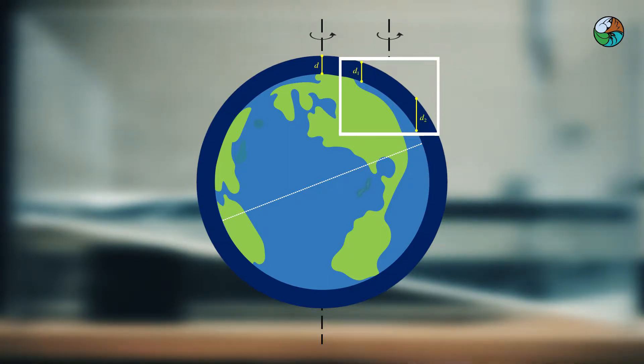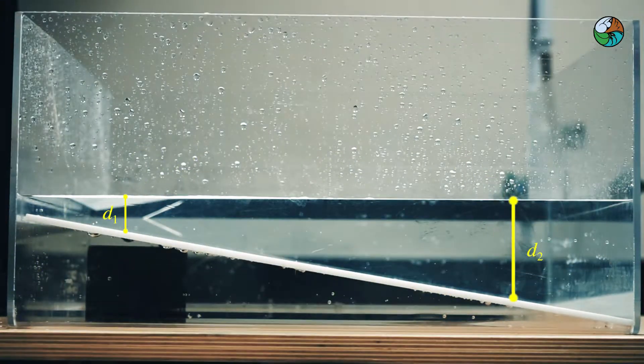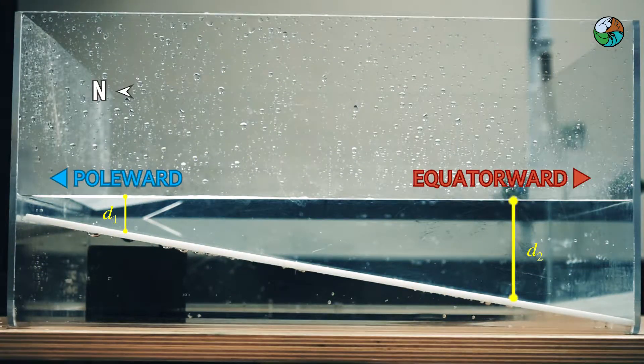Measuring from the bottom of the tank, the water depth varies. For example here, D1 would be measured smaller than D2. Therefore, the deeper end is towards the equator, the shallower end is towards the north pole.